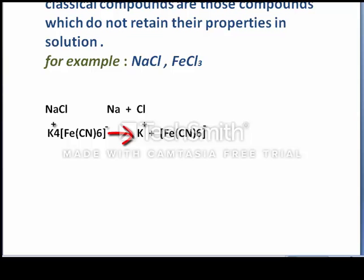Because Fe and CN6 are connected by the coordinate covalent bond, which is the strongest bond, which needs huge amount of energy to break it. That is why they are able to retain their properties in solution state.